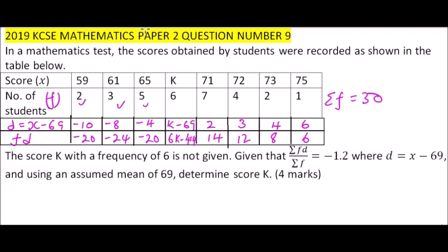30. Then you need to add fd, so you add all these values. Since we have K, when you add minus 20 plus minus 24 plus minus 20, you get it is 6K minus 438. Now that we have, we are given this formula here, then it means that 6K minus 438, that is the summation of fd, divided by summation f is 30, it should give you